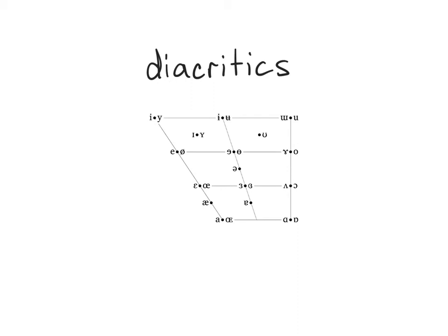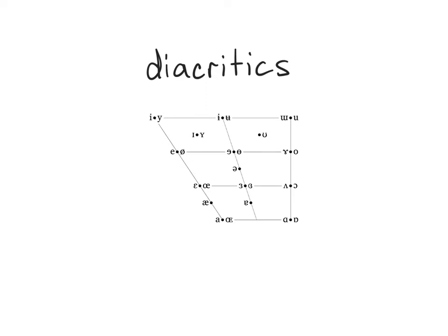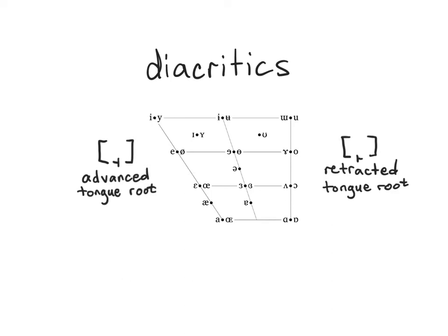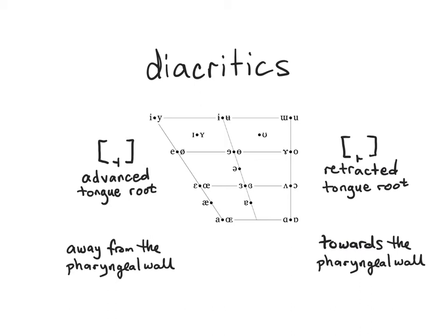Note that the eight diacritics discussed so far do not have absolute strict definitions, but instead are relative articulations. For example, the retraction and centralization diacritics both represent some amount of backing for a front vowel like E, but the exact amount is not defined — they could both refer to the same position, or one could be in front of the other. The IPA also has two diacritics to represent advanced and retracted tongue root — that is, moving the tongue root away from the pharyngeal wall or towards it — which is often used to represent tense and lax vowels where the IPA has no appropriate base symbol.